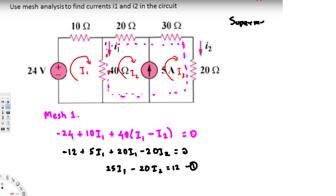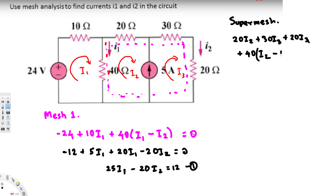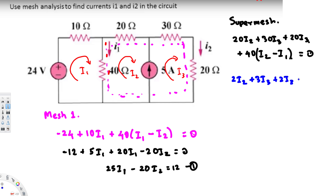Now let's write the super mesh equation. Starting from this 20 ohm: 20·i2, then along the 30 ohm: plus 30·i3, then along the other 20 ohm: plus 20·i3, then coming back to the 40 ohm for i2: plus 40·i2, and i1 is flowing in the opposite direction through the 40 ohm so we add minus 40·i1. That equals zero. Dividing everything by 10 gives: 2·i2 + 3·i3 + 2·i3 + 4·i2 minus 4·i1 equals zero.